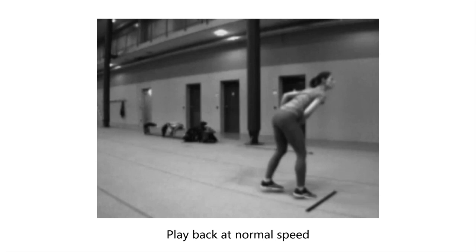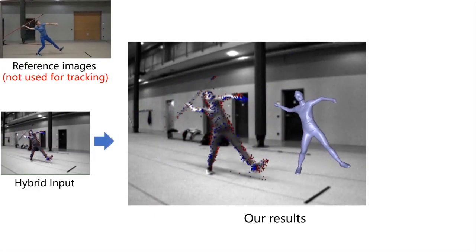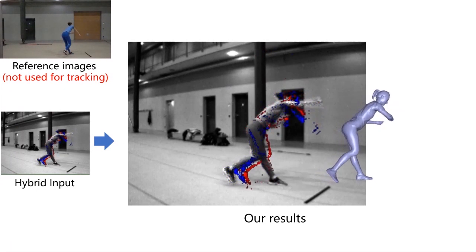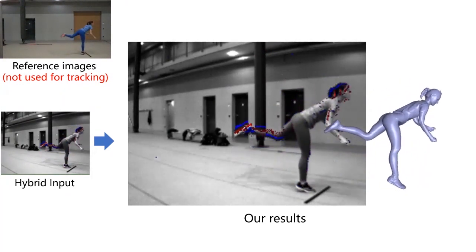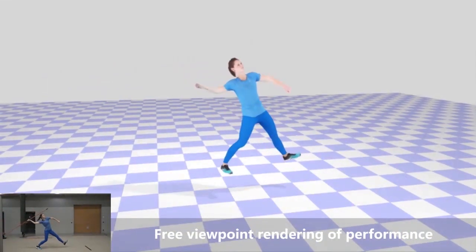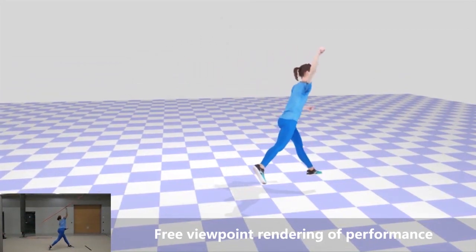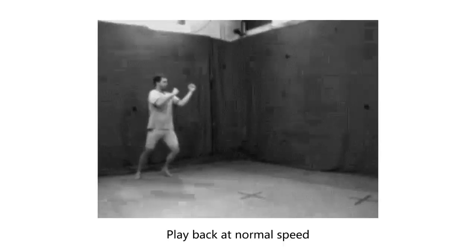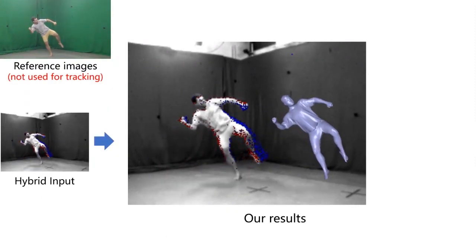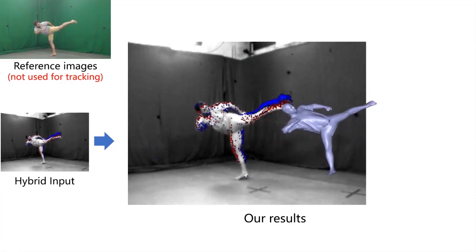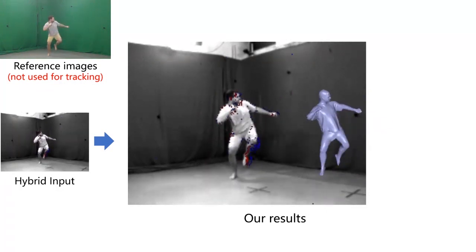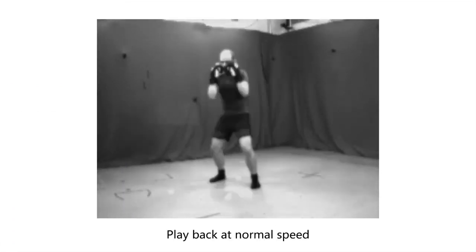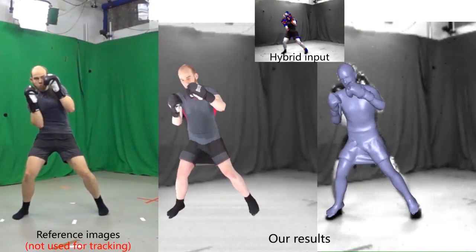Our approach can also handle challenging and fast human motion. Note the high frequency motion details captured by our method. Also note that our reconstructed results are plausible in three dimensions. Our method generalizes well into a variety of motions, like kicking and punching, as well as boxing. Note that our approach achieves realistic tracking results, which overlay nicely on the captured view.